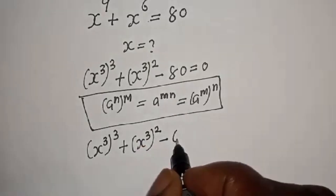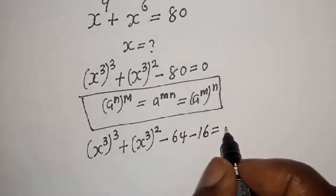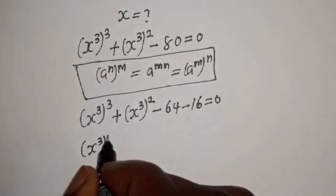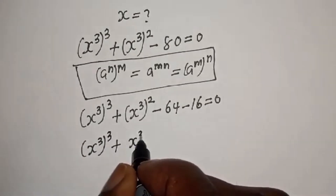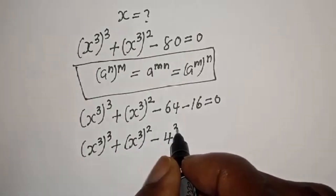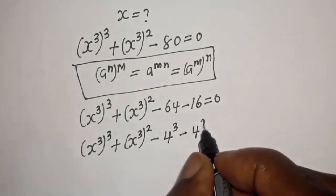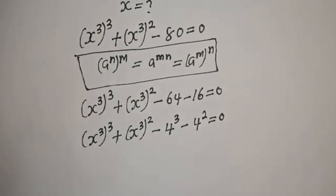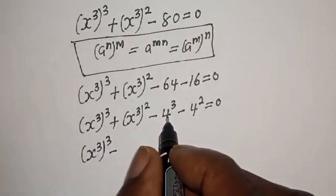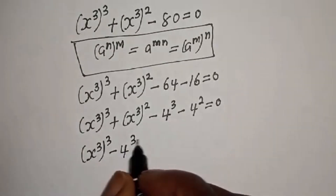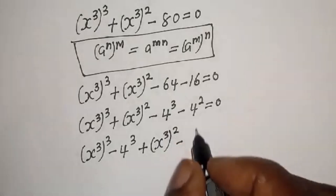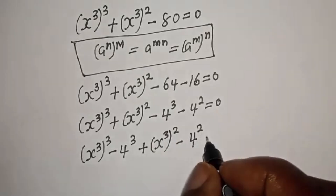This can be written as minus 64 minus 16 is equal to zero. So s raised to power 3 to the power of 3, plus s raised to power 3 squared, minus 64 can be written as 4 raised to power 3, plus s raised to power 3 squared, minus 4 squared, is equal to zero. Let t equal s raised to power 3.